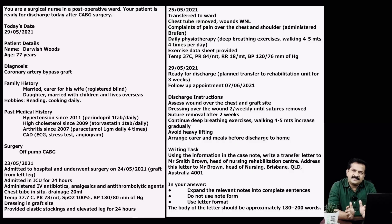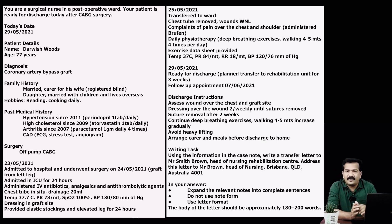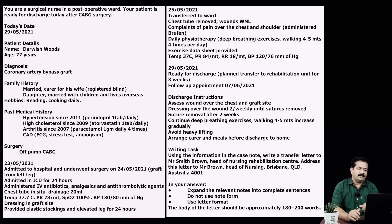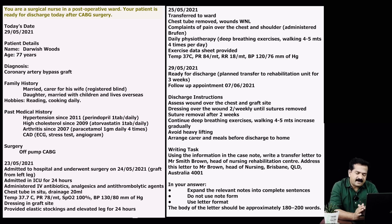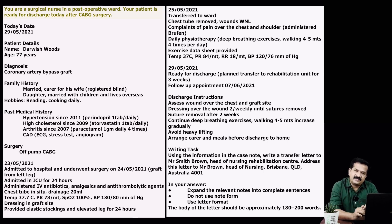When you get the case note, the first thing you need to do is read and understand the writing task. To understand the writing task is to understand who you are writing to and the purpose of your letter. Here you are a surgical nurse in a post-operative ward, your patient has undergone a CABG — that is coronary artery bypass graft — and you are writing a letter to a rehabilitation center for cardiac rehabilitative care for the patient.